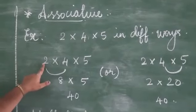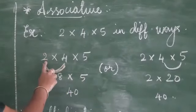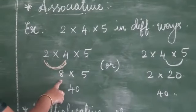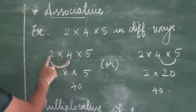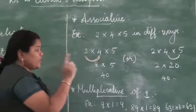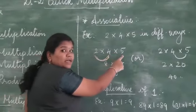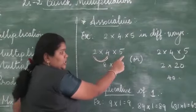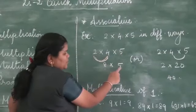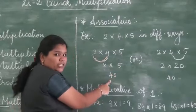First, multiply 2 and 4. Two into four gives you eight. Then multiply that answer by the third digit, five. Eight into five is equal to 40.